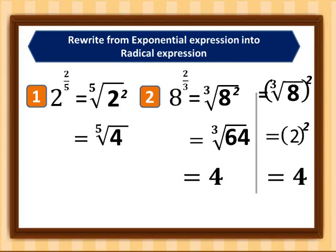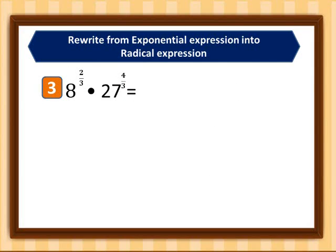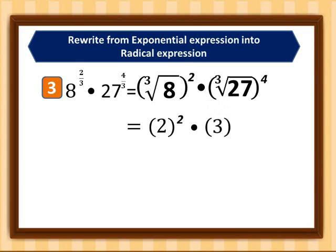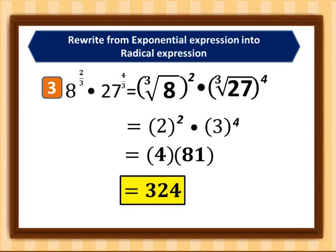For the third example: eight raised to two-thirds multiplied by 27 raised to four-thirds. We have the cube root of eight squared multiplied by the cube root of 27 to the power of four. The cube root of eight is two, copy exponent two; cube root of 27 is three, copy exponent four. Two squared is four, three to the fourth is 81, and four times 81 equals 324.